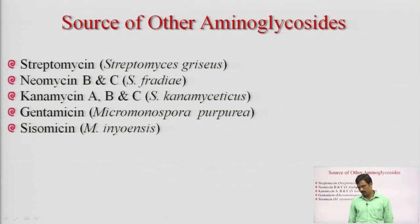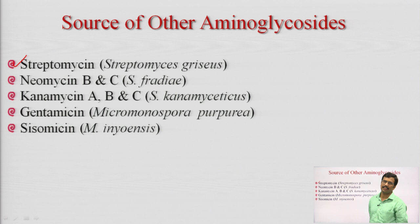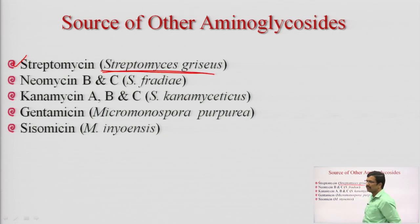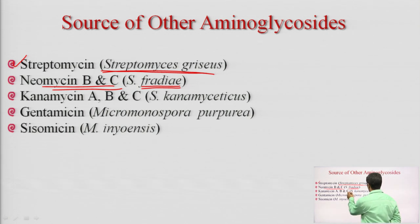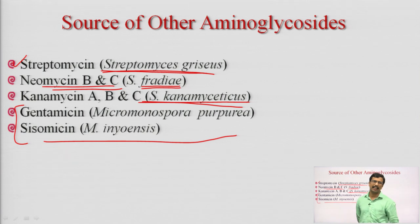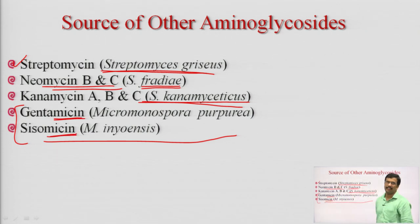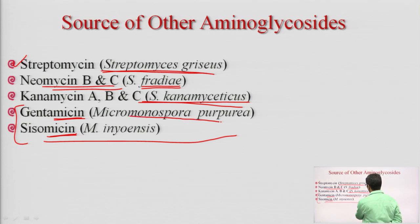Natural aminoglycosides include: Streptomycin (discovered 1944, isolated from Streptomyces griseus), Neomycin B and C (isolated from Streptomyces fradiae), and Kanamycin A, B, C (isolated from Streptomyces kanamyceticus). The last two — Gentamicin (isolated from Micromonospora purpurea) and Sisomycin (isolated from Micromonospora inyoensis) — carry the MICIN suffix due to their Micromonospora origin.